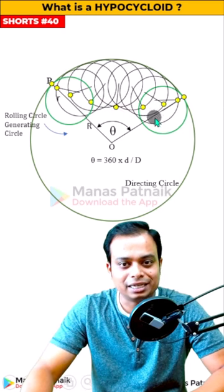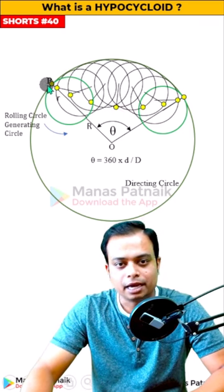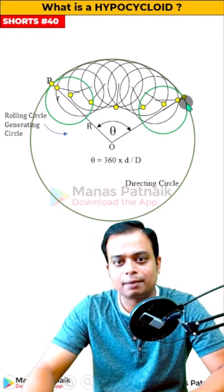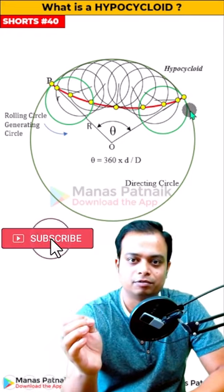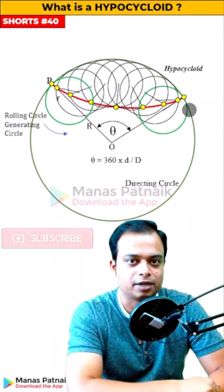The point was here at the first step, here at the second step, and so on. When you join all of these track points in proper sequence, what we have is a curve popularly known as a hypocycloid.